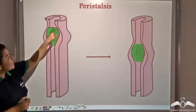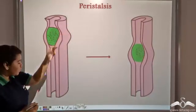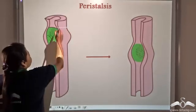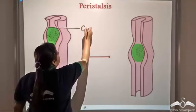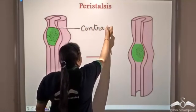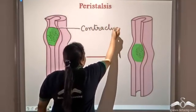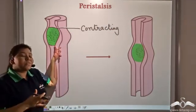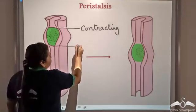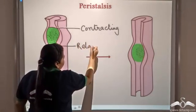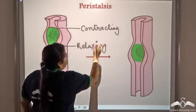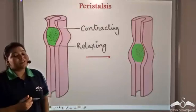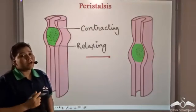Now notice this portion above the food bolus — this part is contracting, and the portion below the food bolus is relaxing. This upper muscular contraction pushes the food bolus downwards.